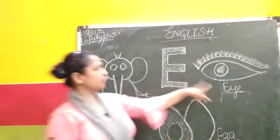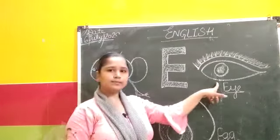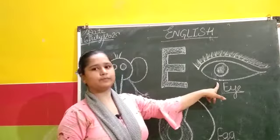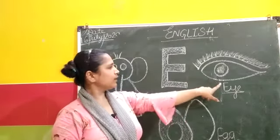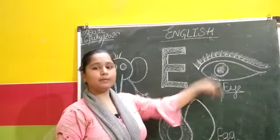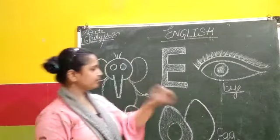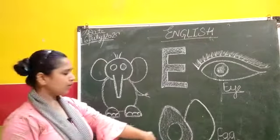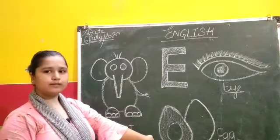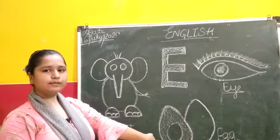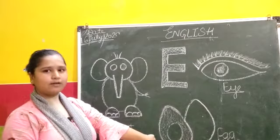Look at this. E for I. I means aank. E for egg. Egg means under.